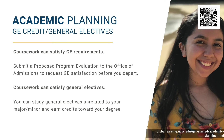Let's go over academic planning for GE credit and electives. Coursework can satisfy GE requirements on a program, but there are only a few courses that are pre-approved for GE credit on some programs. In most cases, you will need to submit a CCI petition to the Committee on Courses of Instruction to request GE satisfaction before you depart. Coursework from a program can also satisfy general electives if you don't need to earn GE, major, or minor credit. In this case, you can simply earn credits towards your degree.